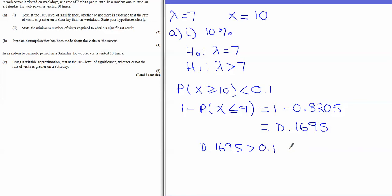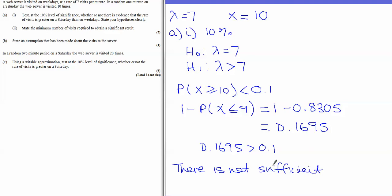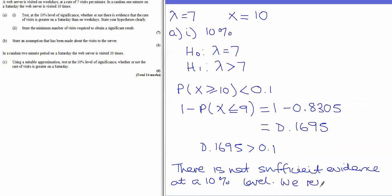Since 0.1695 is greater than 0.1, testing at a 10% level of significance we do not accept the alternative hypothesis — we accept the null hypothesis. There is not sufficient evidence at a 10% level, so we reject H1.